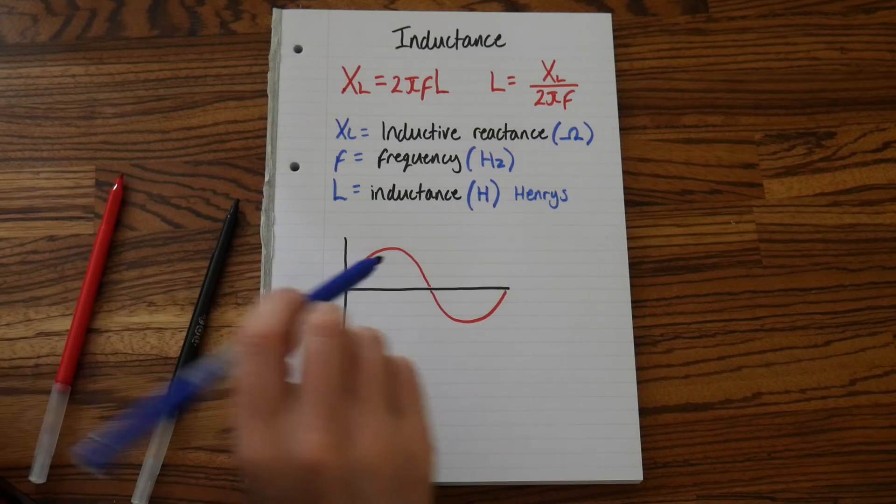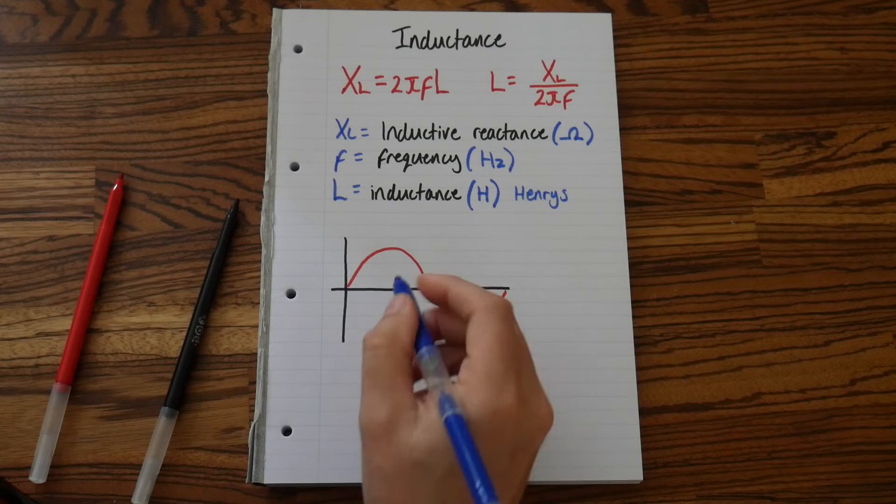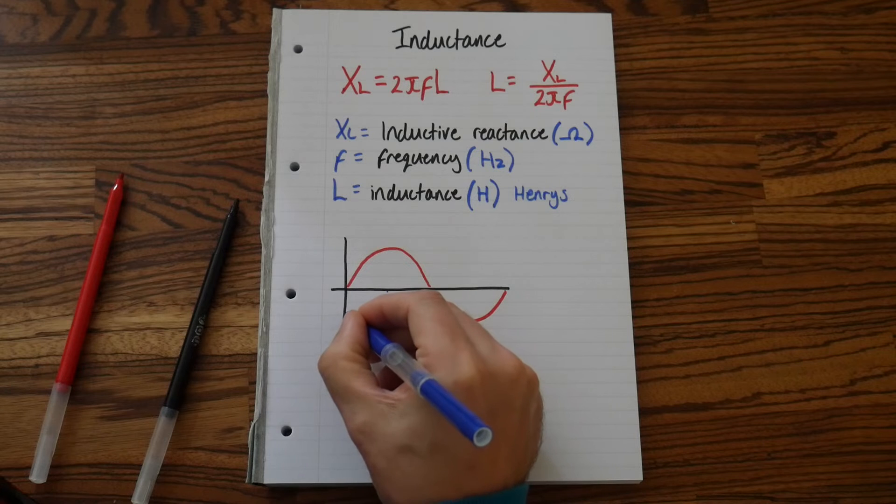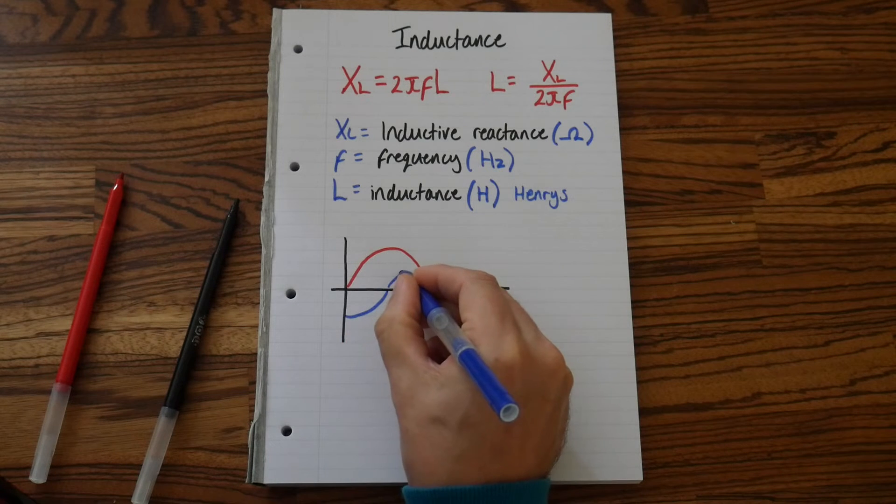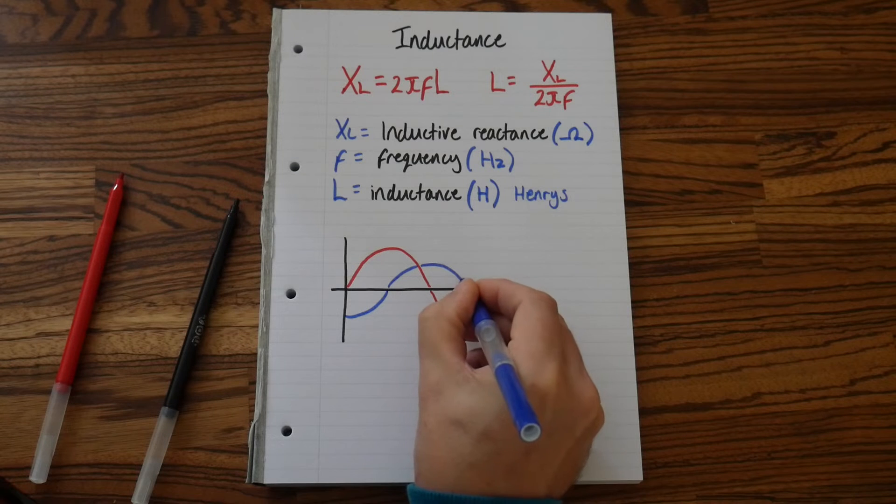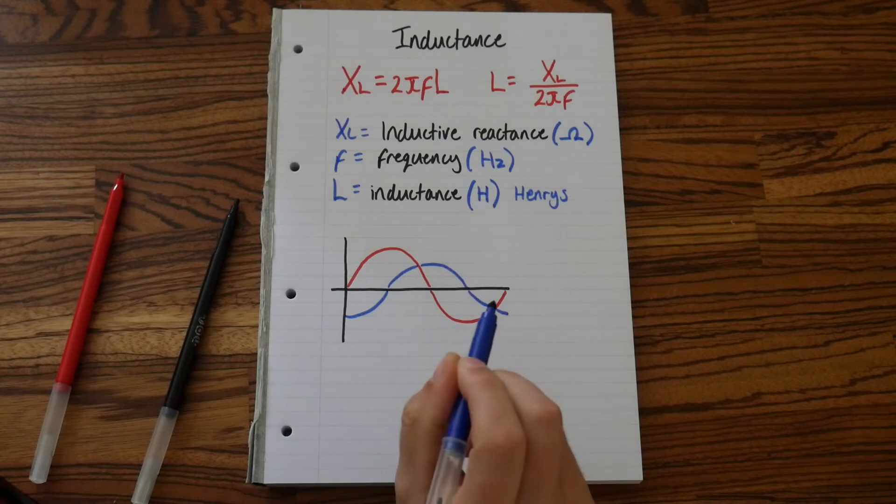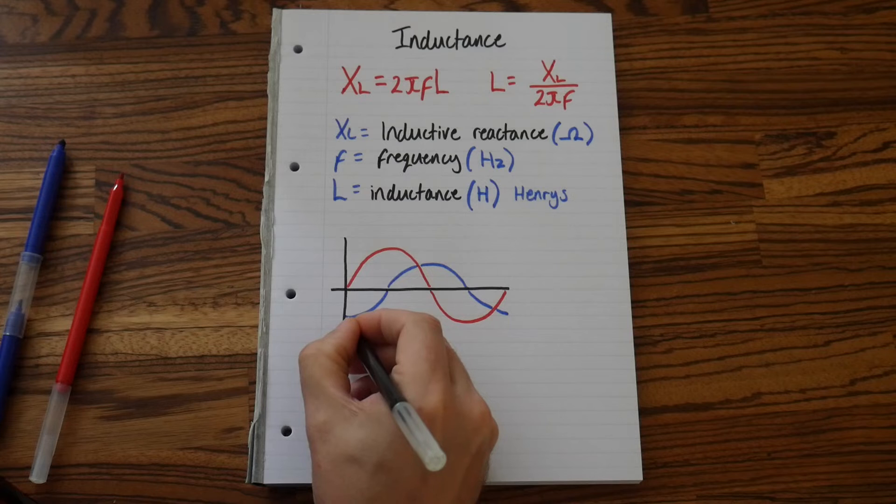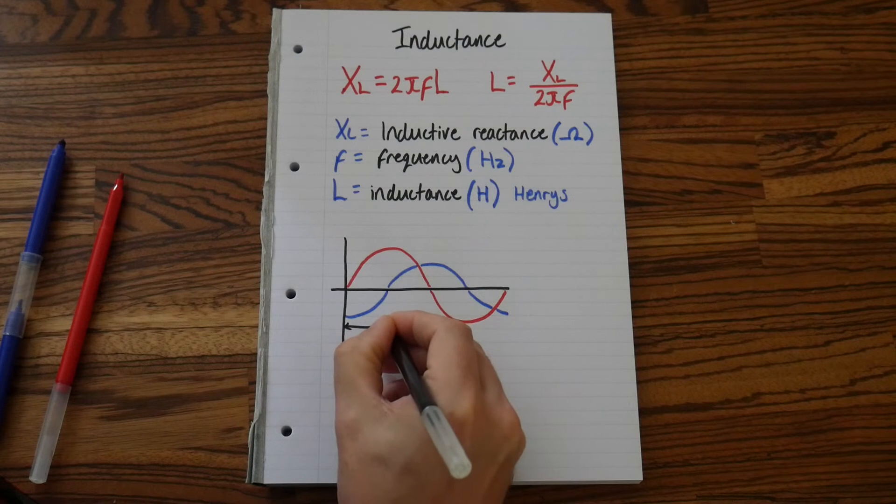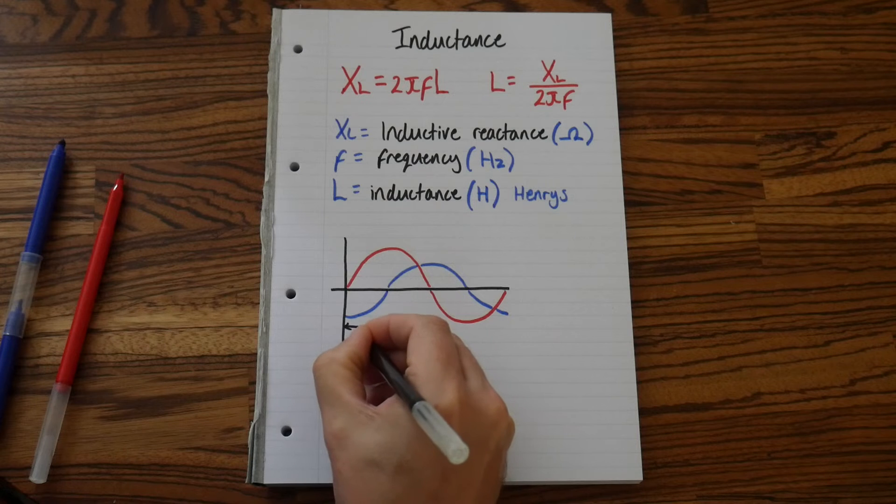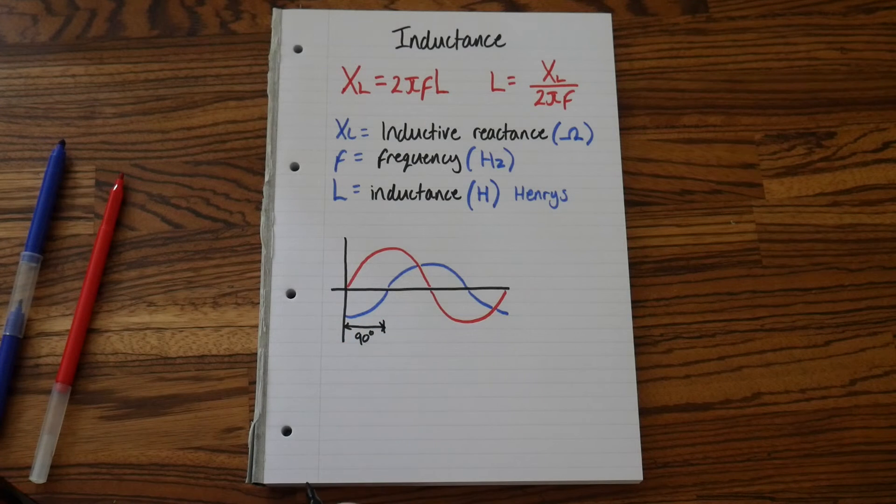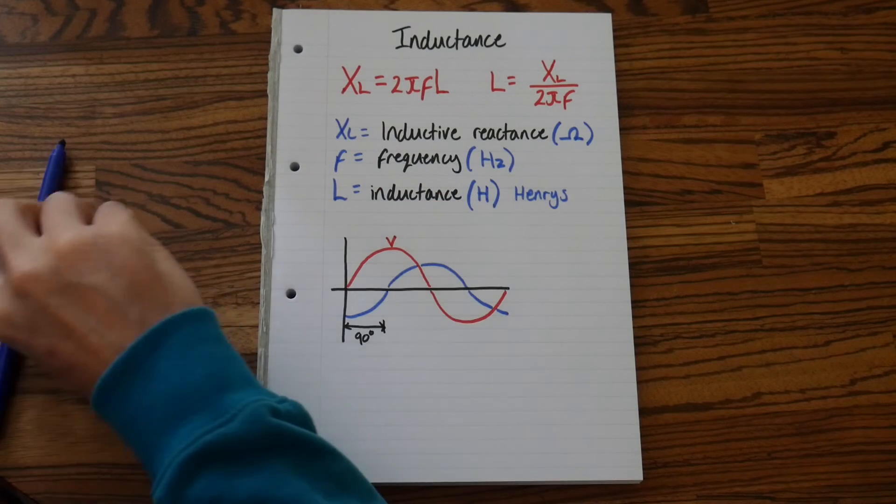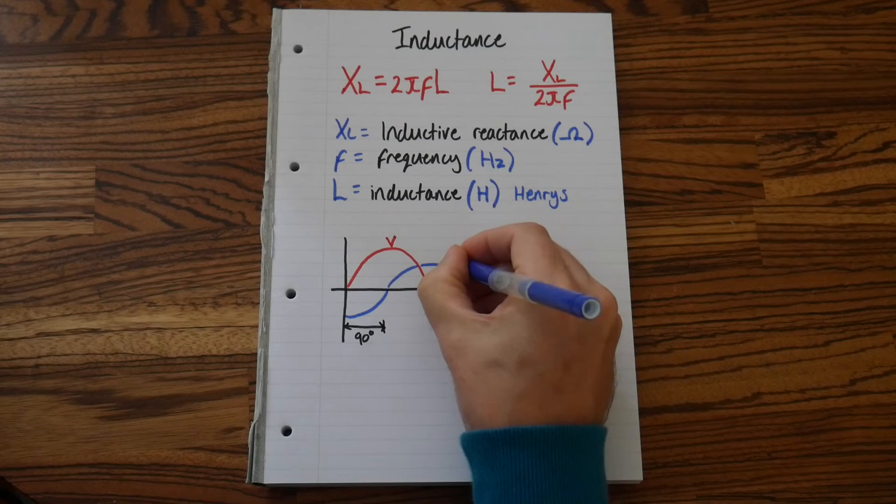And then we can take another colored pen, and my sine wave starts here. They are out, and then if we just put 90 degrees. And then let's just label this up. So the red one is volts, and my blue one is current.